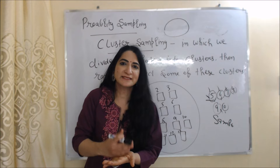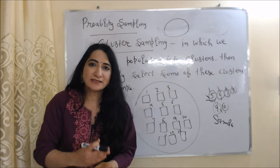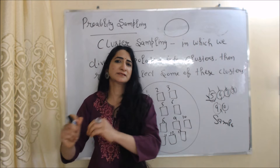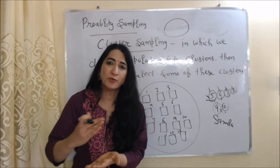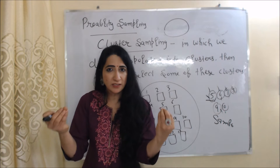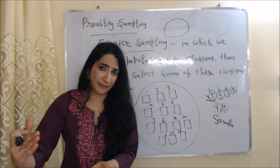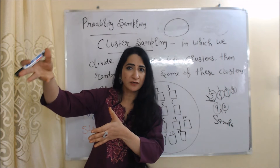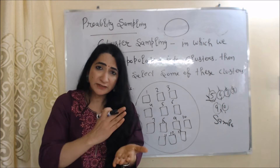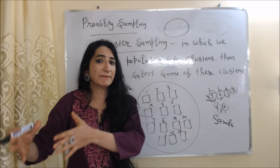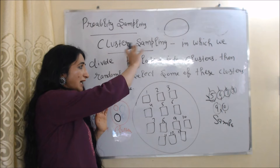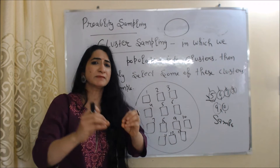Next, we will talk about cluster sampling. Cluster sampling is a type of sampling in which the population is divided into different clusters, and then we randomly pick some clusters as a sample. Clusters are basically groups. Do not confuse cluster sampling with stratified sampling — in stratified sampling, all members within a group share common characteristics, but in cluster sampling, members within a group do not share the same characteristics.